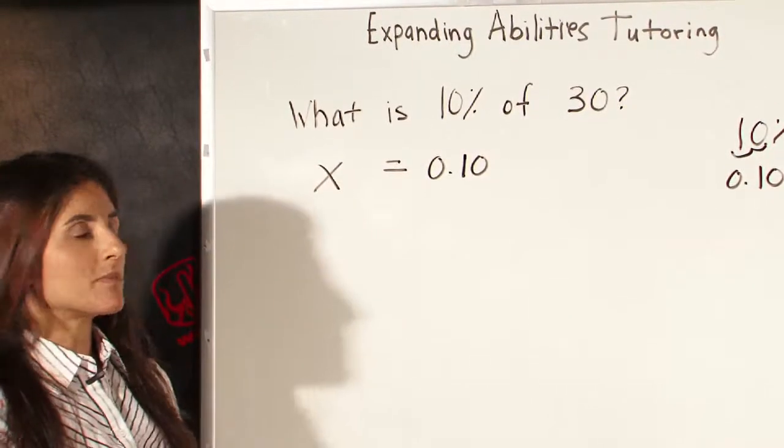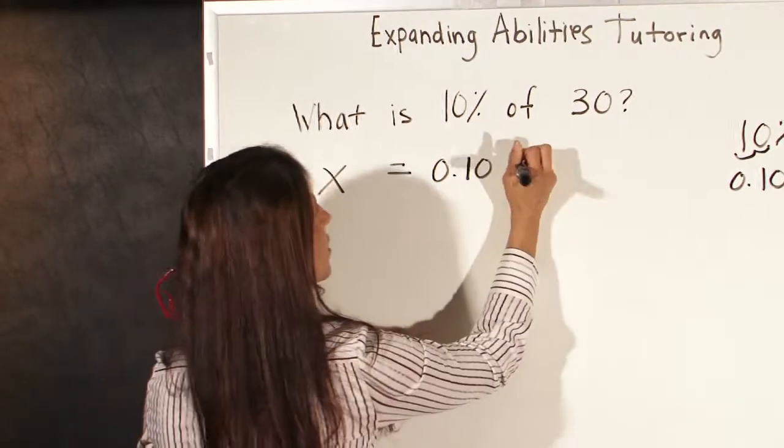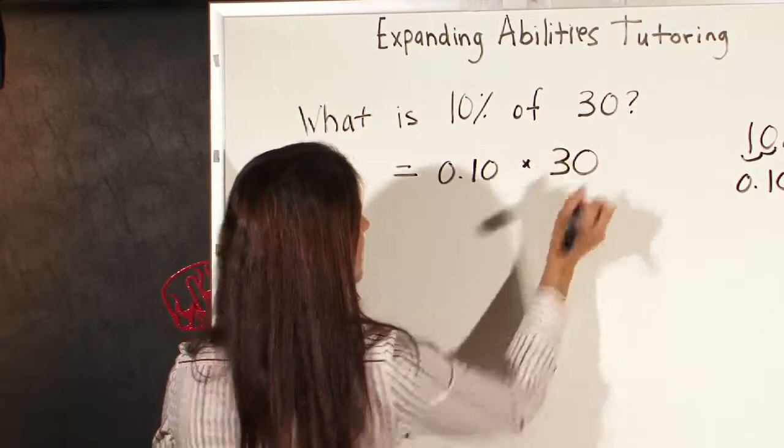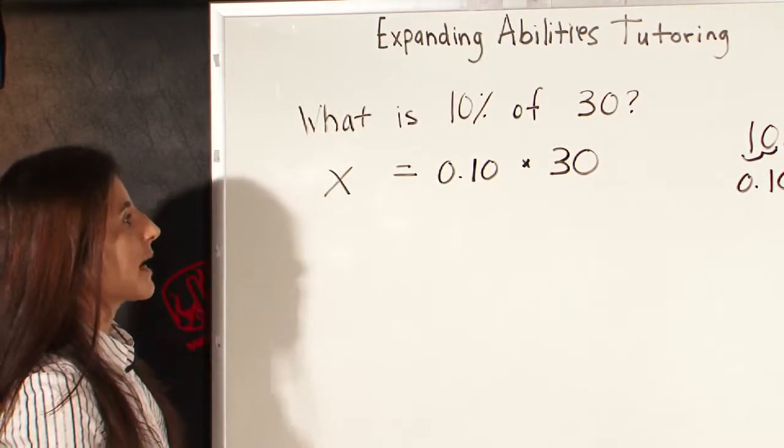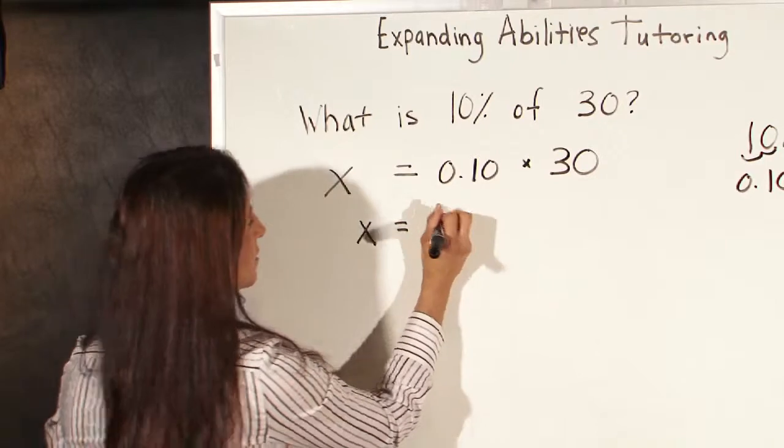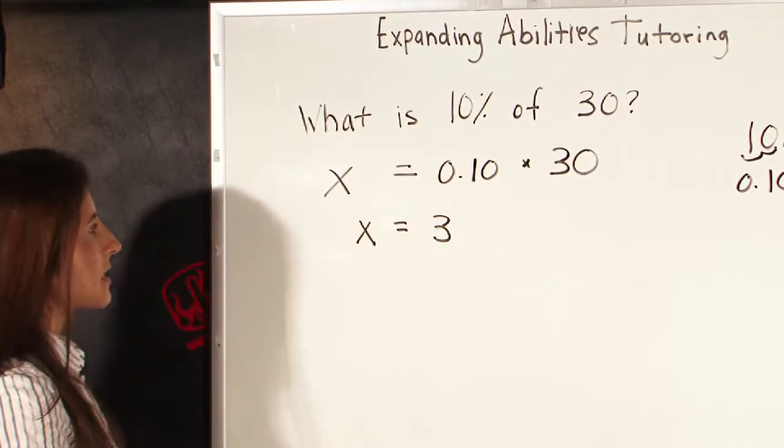Of always means multiplication, so times, and then the number 30. So x is equal to .10 times 30, and .10 times 30 is equal to 3. So in this case, x equals 3.